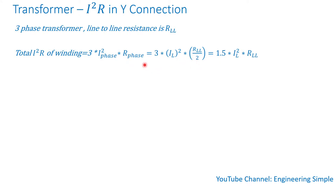The phase resistance is one half of the line-to-line resistance. If you want to know about the derivation or the relationship between phase resistance and line-to-line resistance, there is a video that talks about this calculation. So the total I squared R simplifies to 1.5 times the line current squared times the line-to-line resistance.